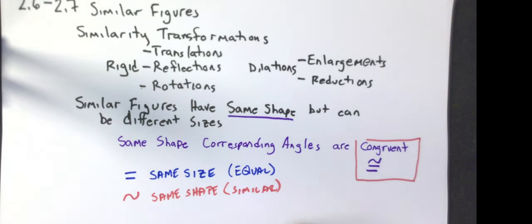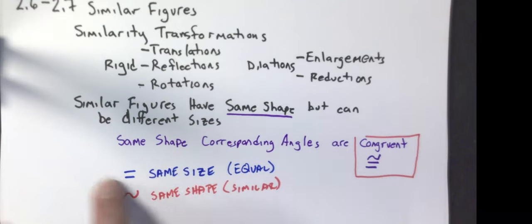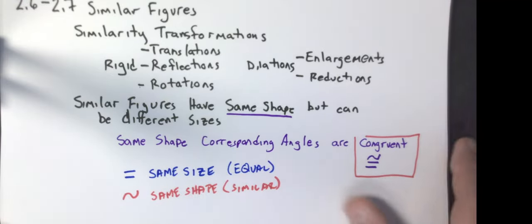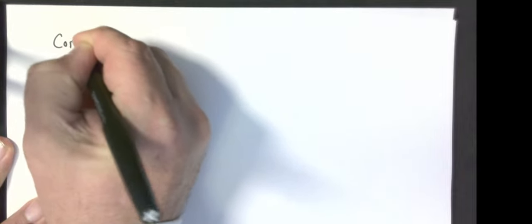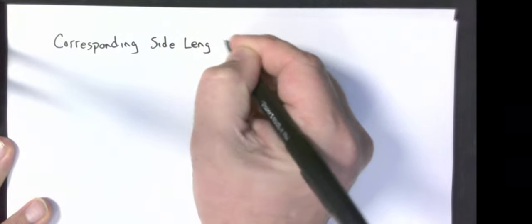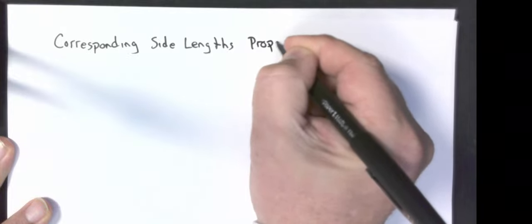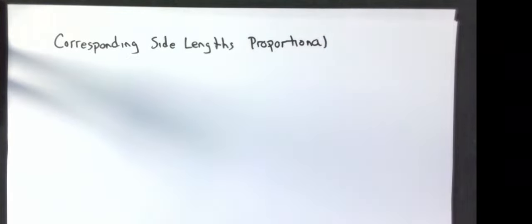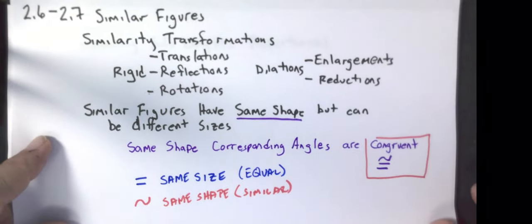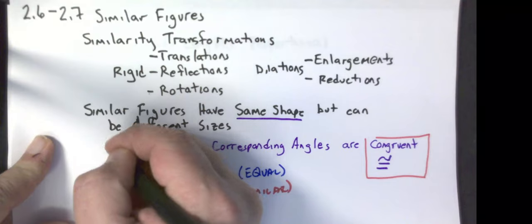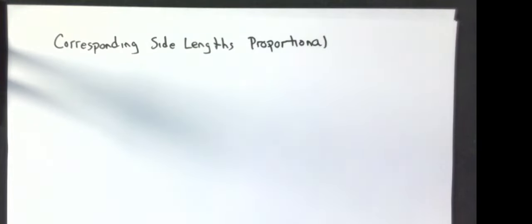Fact one: similar figures have the same shape, which means corresponding angles are congruent. Fact two: corresponding side lengths are proportional. I'm going to draw two triangles. I'll label the first one A, B, C and the other A prime, B prime, C prime. We mark angles as congruent by putting the same number of round tick marks in them.